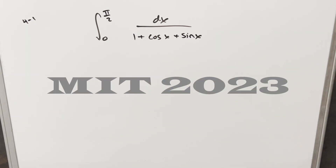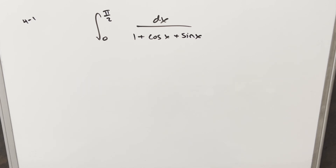We have here another integral. This one's from the MIT Integration Bee 2023. This is from quarterfinals, round four, problem one. We have the integral from zero to pi over two of dx over one plus cosine x plus sine x.